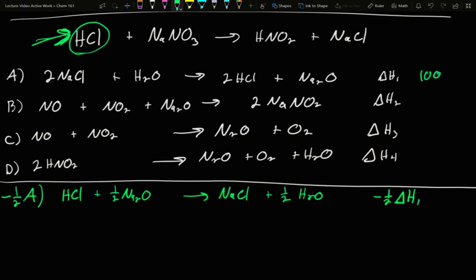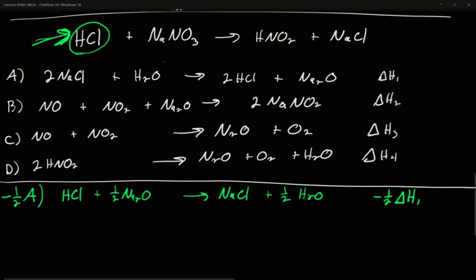I've modified reaction A so that it will give me the HCl amount I want on the correct side. As a result, I'm going to have a delta H that is negative one half of whatever that delta H originally was. If it had been positive 100, it would now be negative 50. We don't know what those delta H's are, we just know the changes we have to make to them.